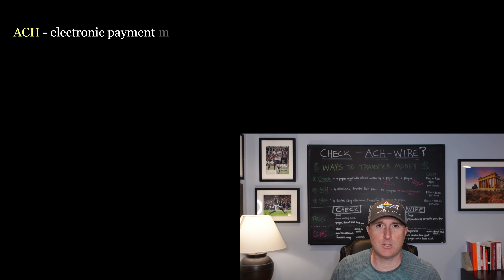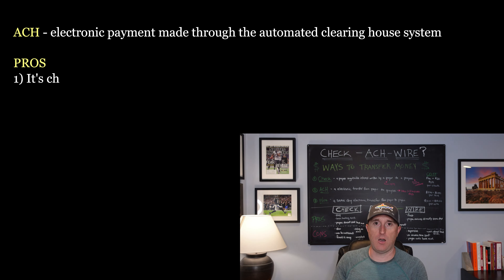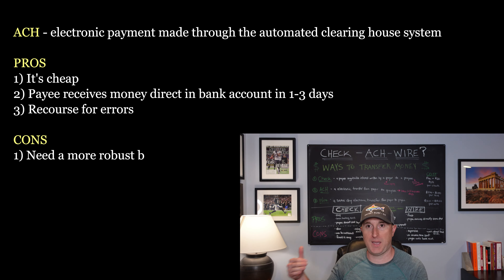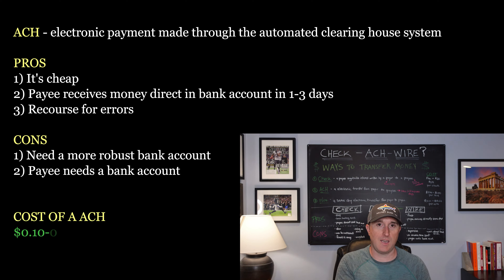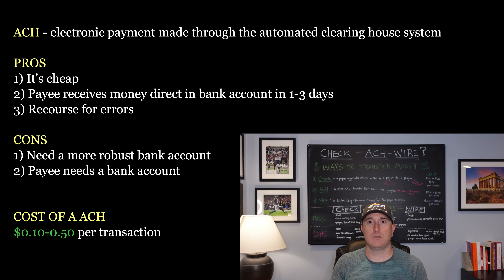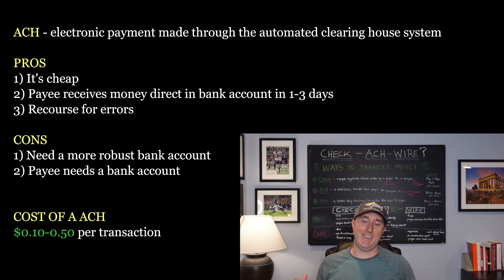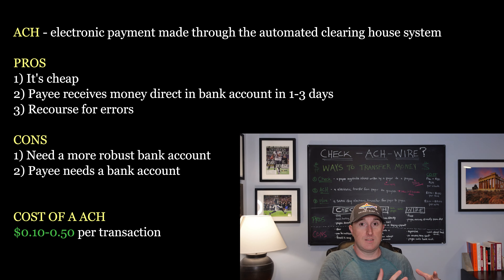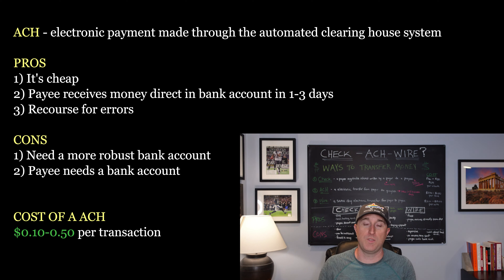Number two on our list is ACH — automated clearing house transactions. These are electronic payments, also known as EFTs, electronic funds transfer. These are electronic payments that you as the payor make to the payee. There is no ink and paper involved in this transaction. You're using your bank account, you need the routing number, you need the account number of the payee, and you're electronically sending the payee money. You can think about this as Zelle. So what are the pros and cons of ACH? Pro — it's cheap, anywhere from $0.10 to $0.50 is what I've seen. It is convenient. The payor is sending it from their bank account to the payee's bank account, no mail involved. It goes straight into the payee's bank account within one to three days.